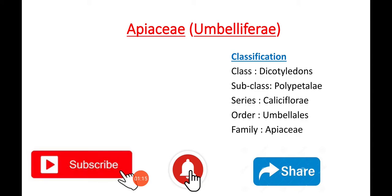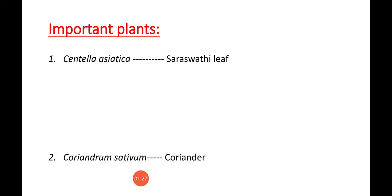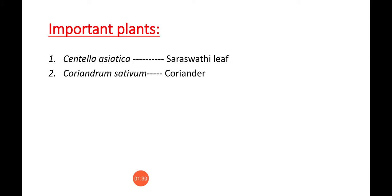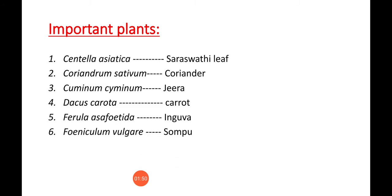Important plants belonging to this family are: number one, Centella asiatica — its Telugu name is Saraswati Leaf. Next is Coriandrum sativum, known as Coriander or Kothimira. Next is Cuminum cyminum, Jeera. Next, Dacus carota, Carrot. Next, Ferula asafoetida, Ingua. Next, Foeniculum vulgare, Sompu. Next, Trachyspermum ammi, Vamu.